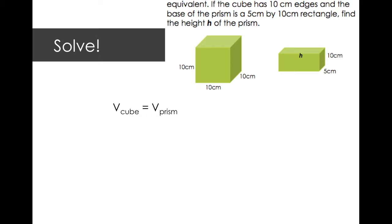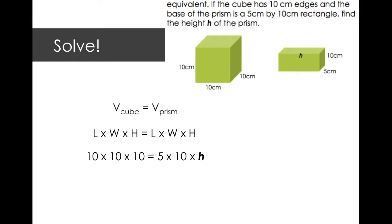The volume of the cube needs to equal the volume of the prism. The volume for a cube is length times width times height, and the same for a prism. Only a cube has the same length, width, and height. For the cube, we have everything we need: 10 times 10 times 10. For the prism, we know the length and width but not the height, so I plug in what I know. Simplifying: 10 times 10 times 10 is 1000, which equals 50 times h. Dividing both sides by 50 gives us h equals 20.